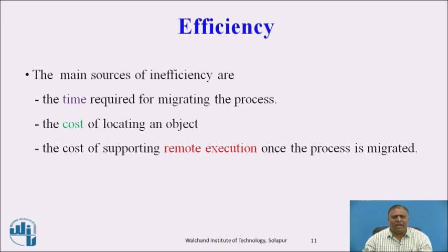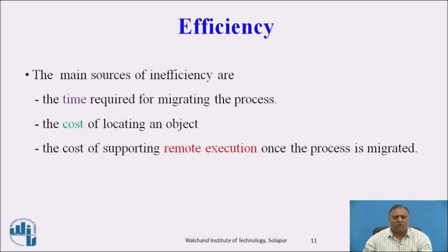Efficiency: The main sources of inefficiency are the time required for migrating the process, the cost of locating an object, and the cost of supporting remote execution once the process is migrated. When all these parameters are taken into account, the efficiency of process migration increases. This includes how much time is required for migrating a process from source node to destination node, as well as the cost of locating an object and the cost of remote execution.